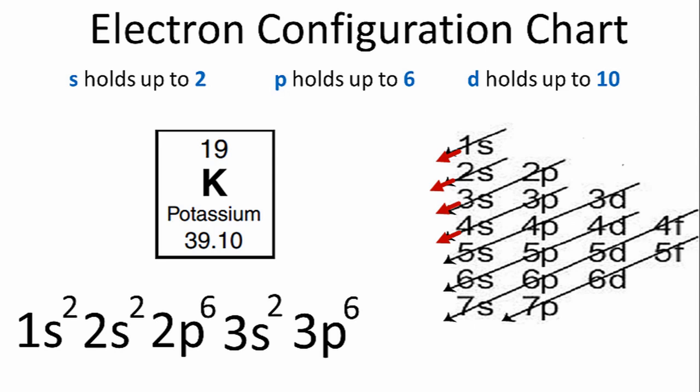At this point, we've used 18 electrons. We only need one more to get to that 19. So, after the 3p in the fourth row, we have that 4s term. And all we need to do is put 1 electron there.